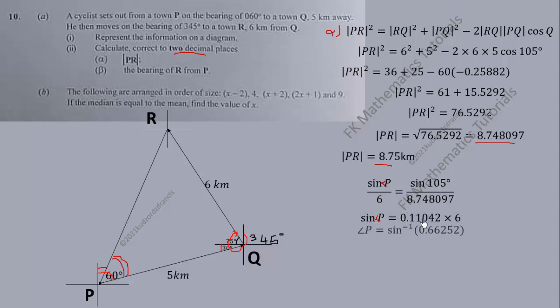So angle P is equal to sine inverse of this value we got from here. So angle P is equal to 41.4923 degrees. That is angle P here. So this angle is that.